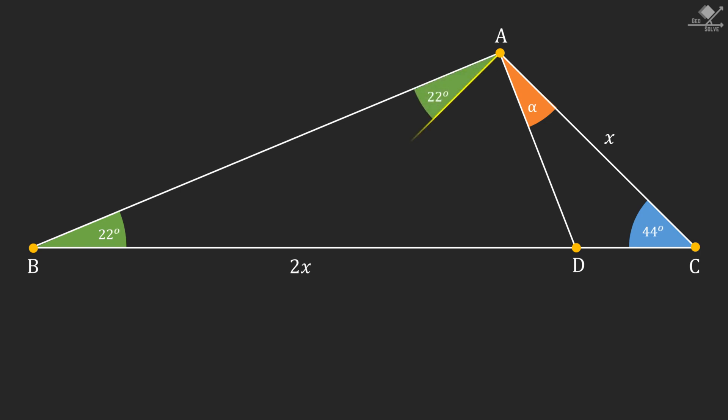First, draw an auxiliary line from point A, making a 22-degree angle with line segment AB. This will create an isosceles triangle with equal sides BE and EA.